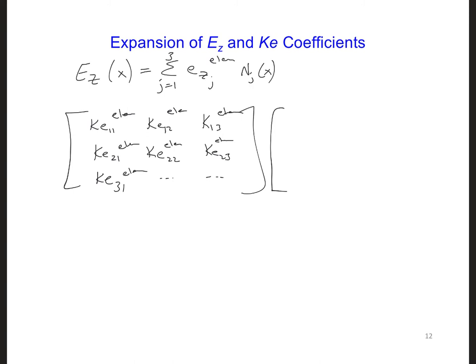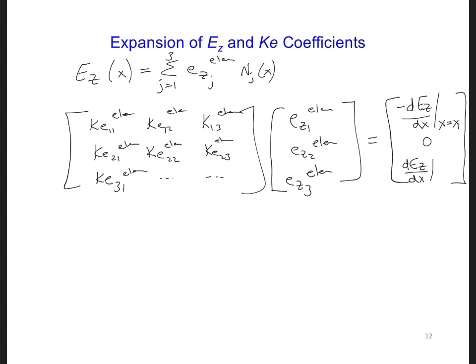All right, and then that is multiplied times ez1, ez2, ez3. And on the right side, we have something that's equivalent to what we had for linear elements. Minus dez/dx, evaluated at x equal x1, the left node. We're going to have 0 at the internal node, because the derivative will be continuous. The solution will be continuous, so the derivative will be 0. And here it's evaluated at x2.